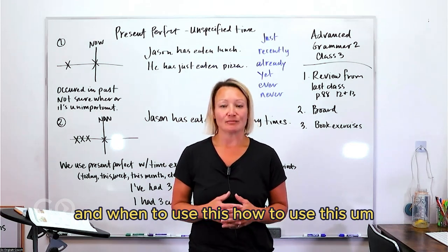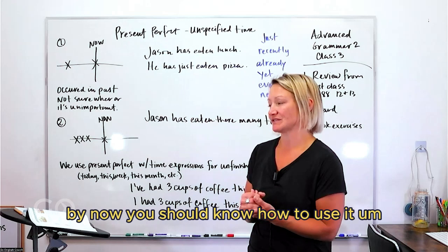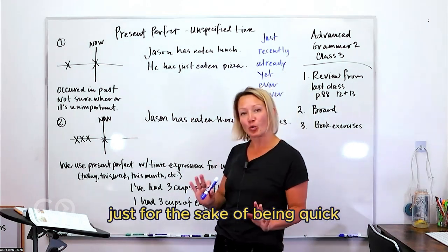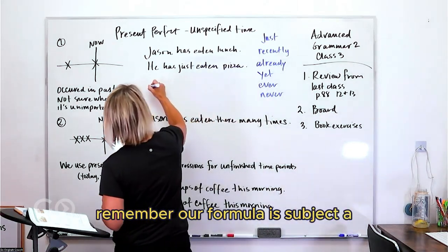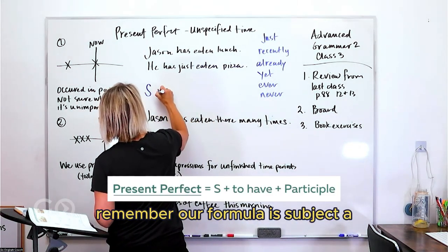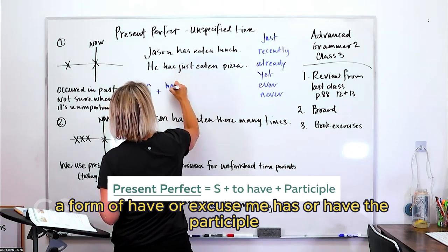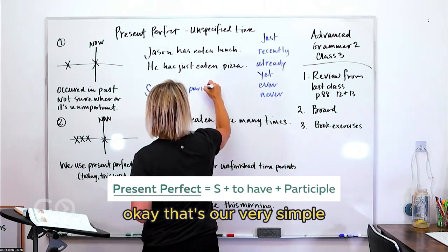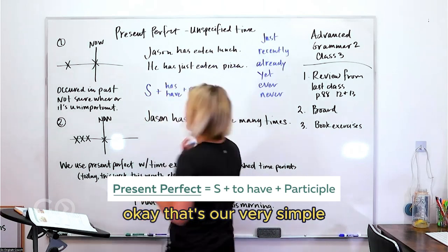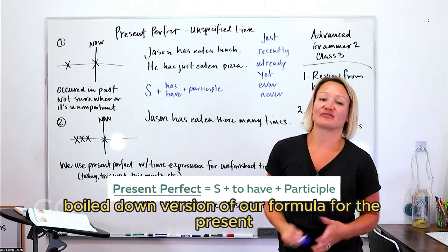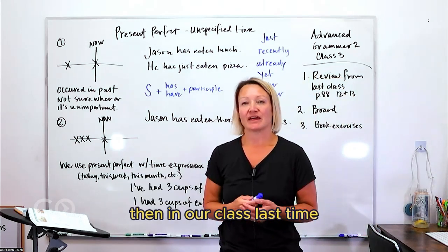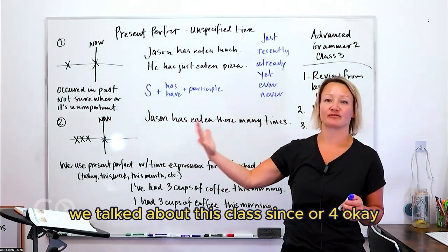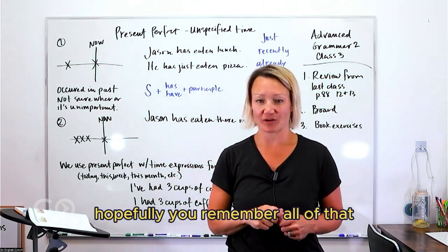By now you should know how to use it. Just for the sake of being quick, let's review. Our formula is: subject + a form of 'has' or 'have' + the participle. That's our very simple, boiled-down version of the formula for the present perfect tense.